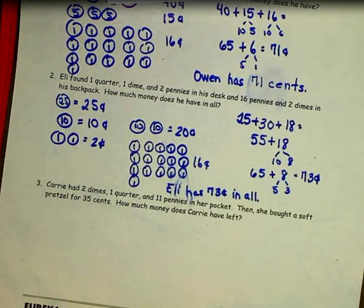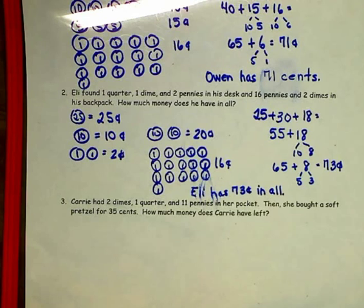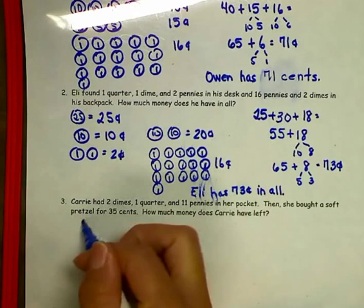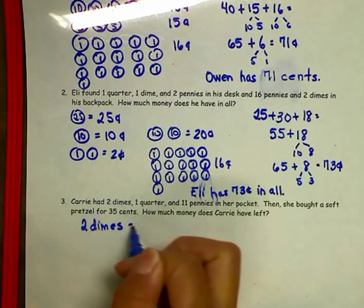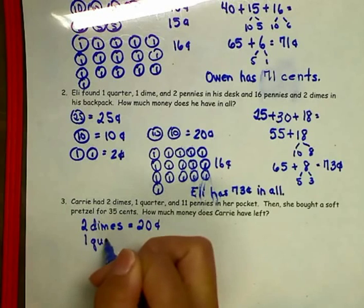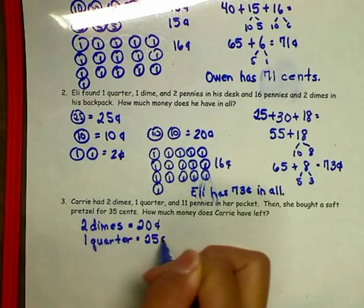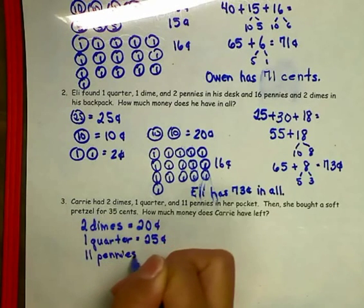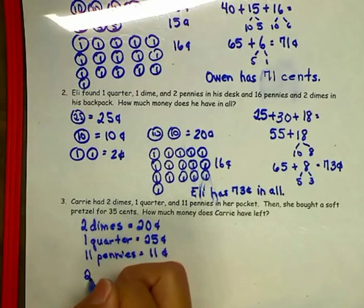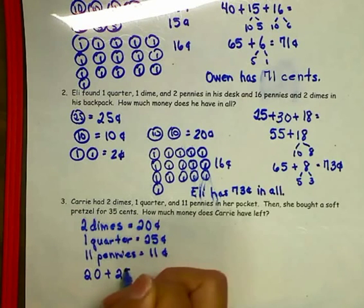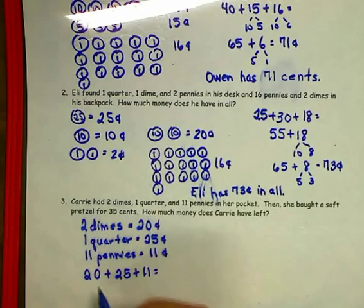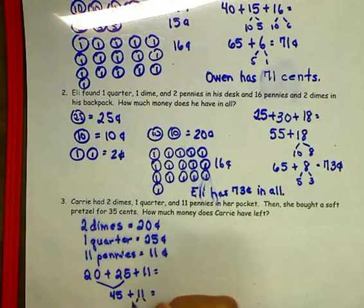Carrie had 2 dimes, 1 quarter, and 11 pennies in her pocket. Then she bought a soft pretzel for 35 cents. How much money does Carrie have left? Before I figure out how much she has left, I need to find how much money she has in her pocket. She has 2 dimes totaling 20 cents, 1 quarter totaling 25 cents, and 11 pennies totaling 11 cents. I'll add 20 plus 25 plus 11. 20 plus 25 is 45, plus 11 — decompose 11 into 10 and 1 — 45 plus 10 is 55, plus 1 is 56 cents.